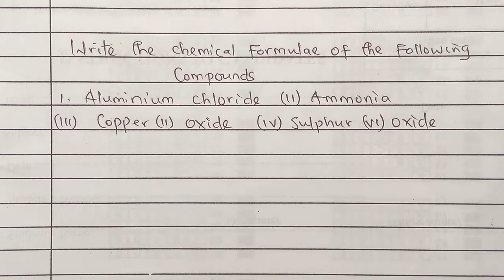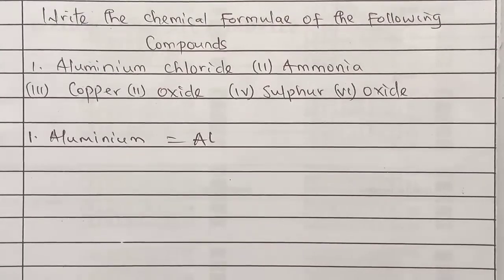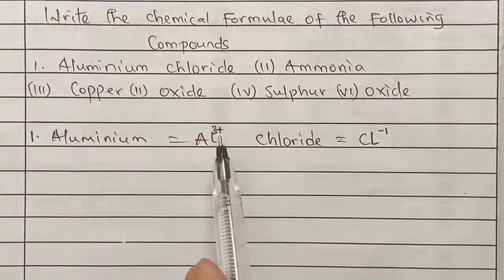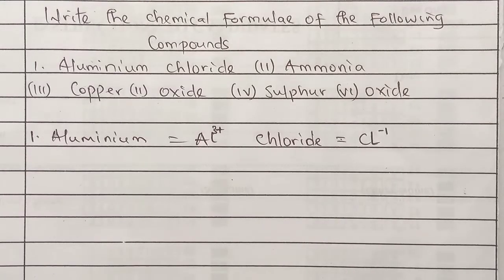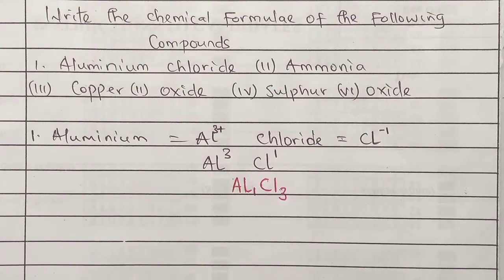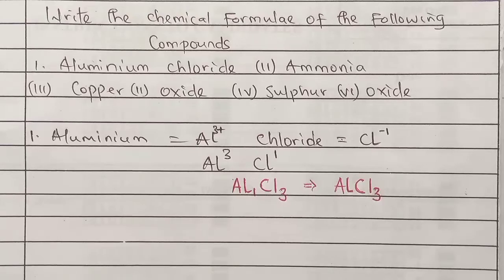Write chemical formulas for the following compounds. For aluminum chloride: the symbol for aluminum is Al, and chloride comes from chlorine with symbol Cl. Aluminum is in group 3 so its charge is +3, and chlorine by electronic configuration (2,8,7) has a charge of minus 1. By criss-cross, the 1 from Al goes to Cl and the 3 from Cl goes to Al, giving Al1Cl3. Since the subscript 1 is unnecessary, the formula is AlCl3.